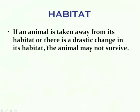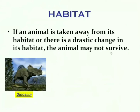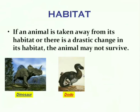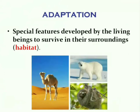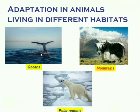If an animal is taken away from its habitat or there is a drastic change in its habitat, the animal may not survive. For that reason, many animals like dinosaurs, dodo, saber-tooth lion, and saber-tooth tiger have become extinct due to drastic changes in their habitat or climate. Just like plants, animals also develop special features to survive in their surroundings, and these special features are called adaptation.